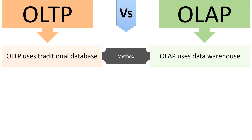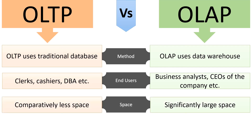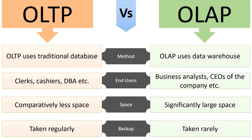OLTP uses a traditional database to store data, however OLAP uses a data warehouse to store data. End users of OLTP are clerks, cashiers, and DBAs, whereas the end users of OLAP are business analysts and CEOs. OLTP requires comparatively less storage space when compared with OLAP. Backup of OLTP is taken regularly whereas the backup of OLAP is taken rarely.